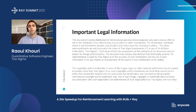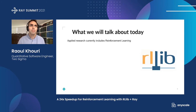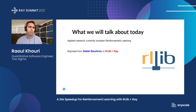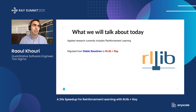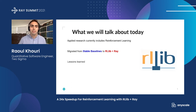So what are we going to be talking about today? We're going to be talking about RLLib. A lot of my team's applied research currently includes reinforcement learning, and we recently — or I guess in mid-year 2020 — migrated from stable baselines to RLLib. We learned a lot, we got a 24x speedup, and we're going to be talking about the lessons learned from that migration, as well as this case study of that experiment and why it got such a large speedup.